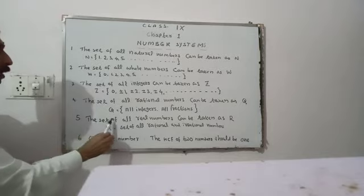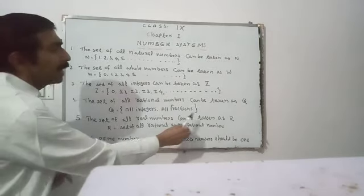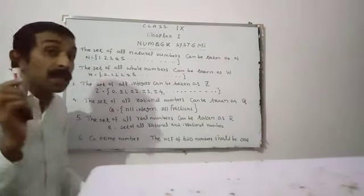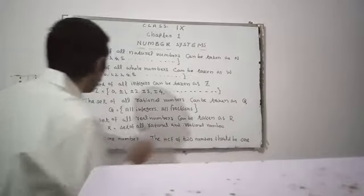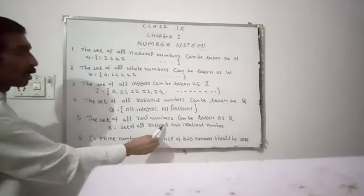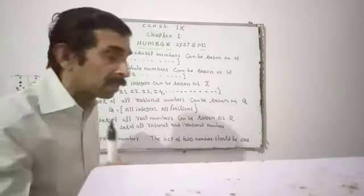Next, the next part about real numbers. Real numbers can be taken as R. Then, R is equal to set of all rational and irrational numbers.